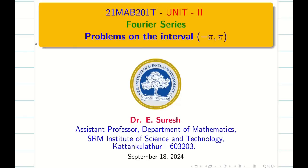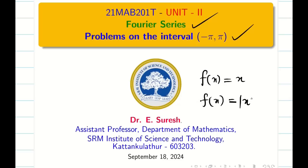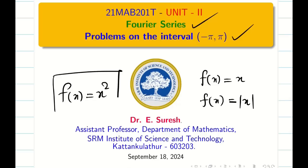Dear students, welcome to the problem solving sessions on Fourier series under the interval minus pi to pi. In the part 1 video, we dealt with problems f(x) = x and f(x) = |x|. In today's video, we are going to see a very important problem: f(x) = x² with different deductions.